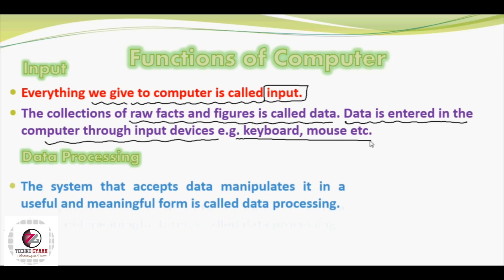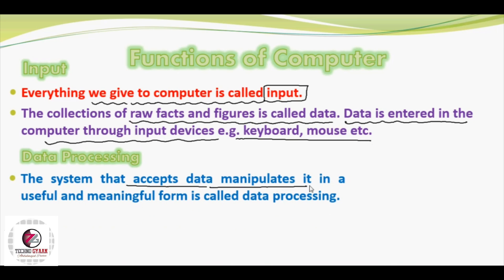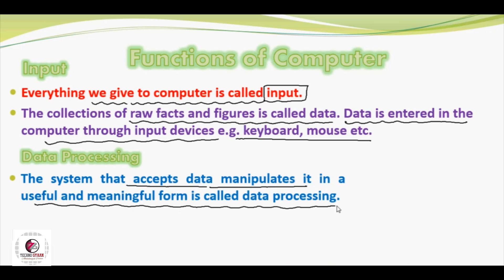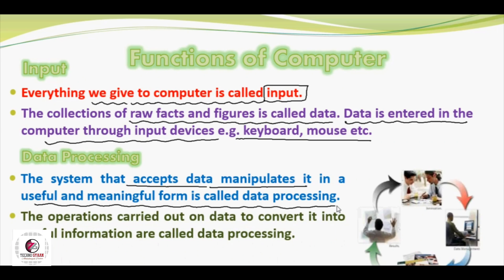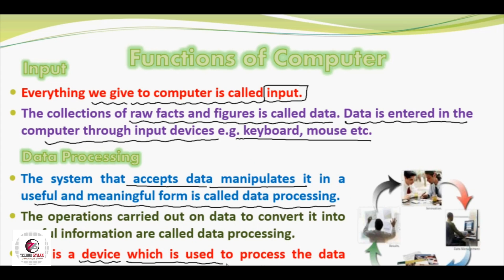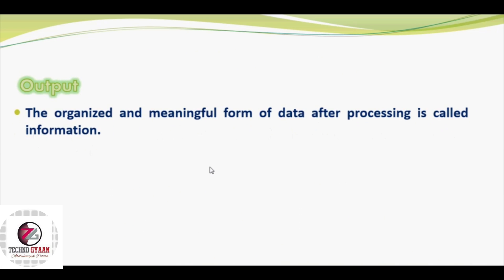The system that accepts data and manipulates it in a useful and meaningful form is called data processing. This is the function in which required functionality is performed on input data and data is converted into information. The operations carried out on data to convert it into useful information are called data processing. CPU is the device used to process data arithmetically and logically to convert it into information. The CPU contains the arithmetic logical unit and a control unit — these are the major parts that play the role of processing and convert any type of data into information.